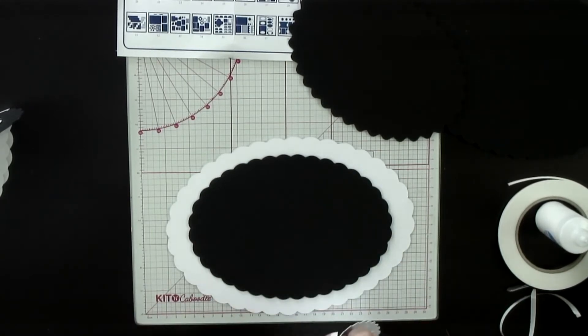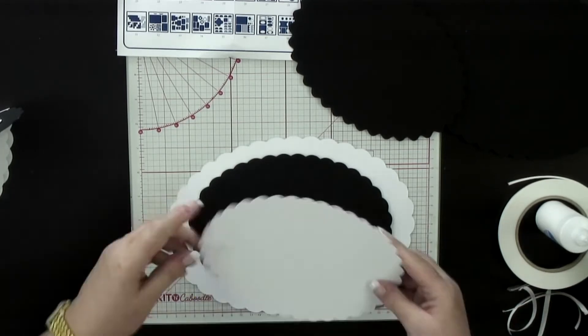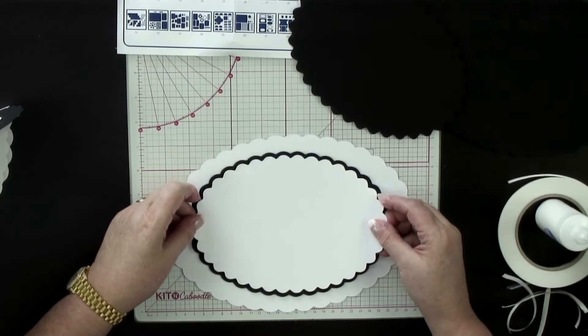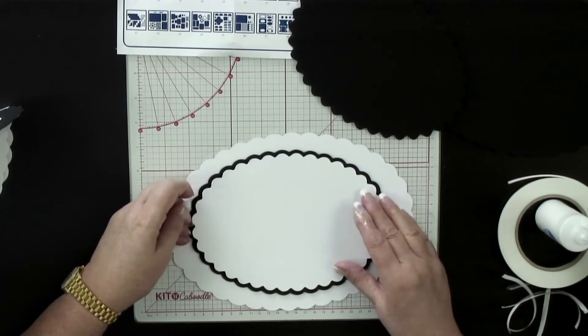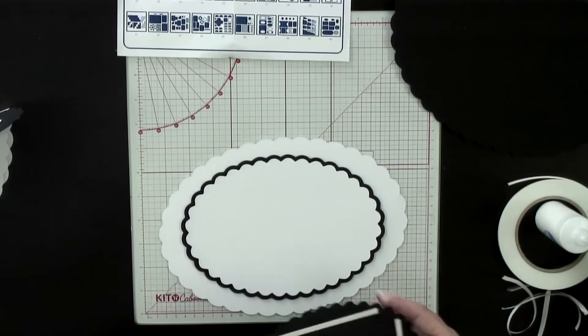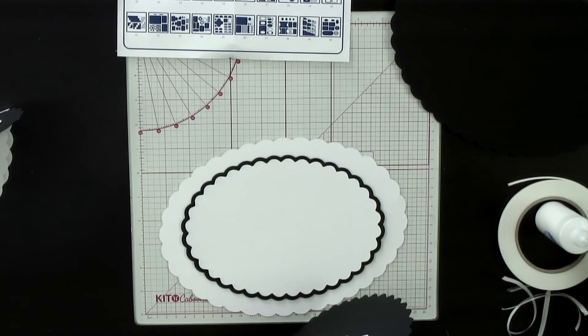It starts us thinking about perspective and where we're going to layer up our design. Now because the scallops have been cut so that they marry up perfectly, this is a very easy card for us to create dimension on.